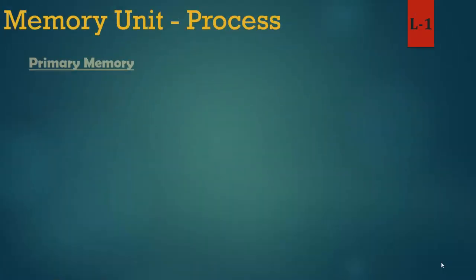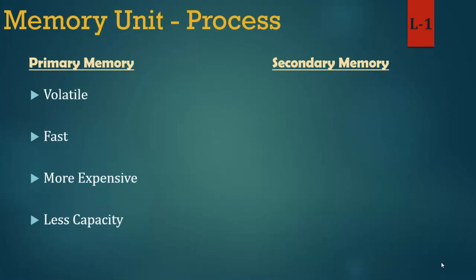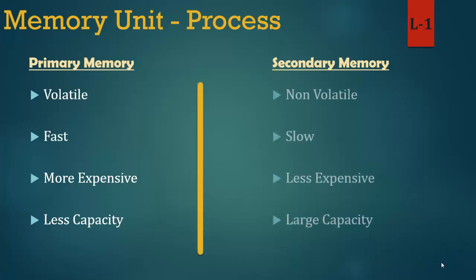Difference between primary memory and secondary memory: Primary memory is volatile, fast, more expensive and has less capacity. Secondary memory is non-volatile, slow, less expensive and has large capacity.